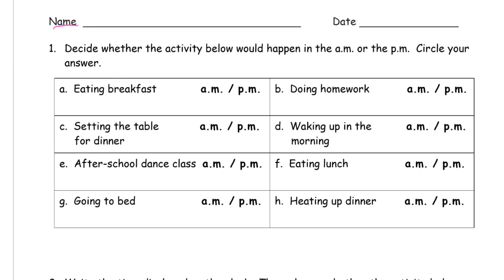And now we're deciding whether the activity that's described, like eating breakfast or doing homework, would happen in the a.m., which usually we think of as the morning, and the p.m., which comes after noontime and includes the evening up until midnight. So circle your answer.